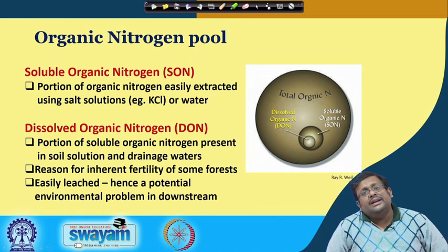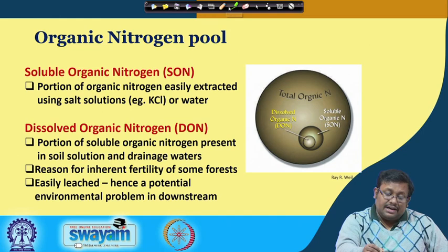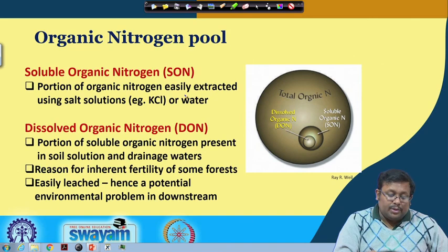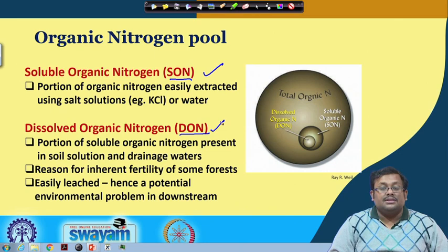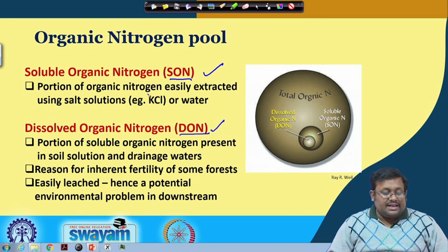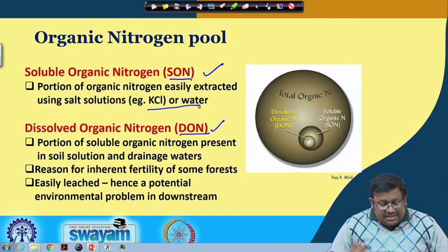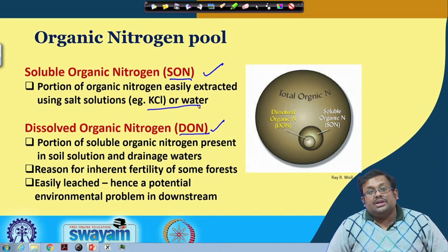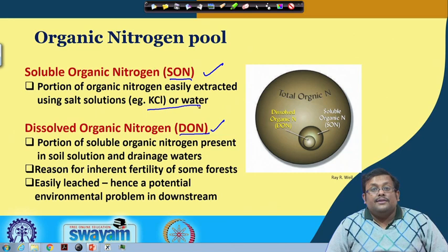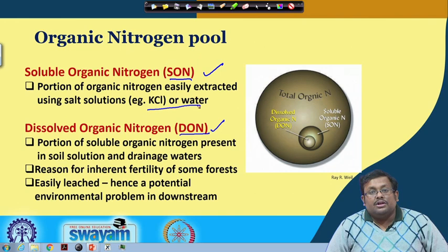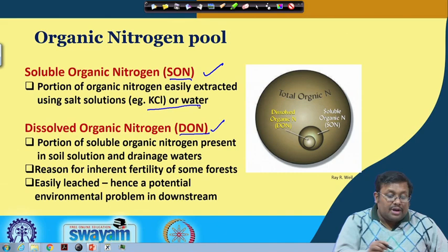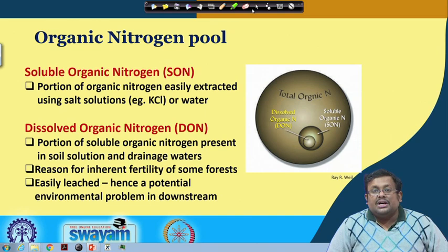Let us see what are the different organic nitrogen pools. Total organic nitrogen has two different pools: one is called SON — soluble organic nitrogen — and another is called DON — dissolved organic nitrogen. The soluble organic nitrogen is the portion of organic nitrogen which can be easily extracted using a salt solution like KCl or water. DON is the portion of soluble organic nitrogen present in salt solution and drainage waters. DON is the reason for inherent fertility of some forests and they are easily leached, presenting a potential threat for environmental contamination, specially in downstream areas. Remember that for plants the essential forms are ammonium and nitrate.